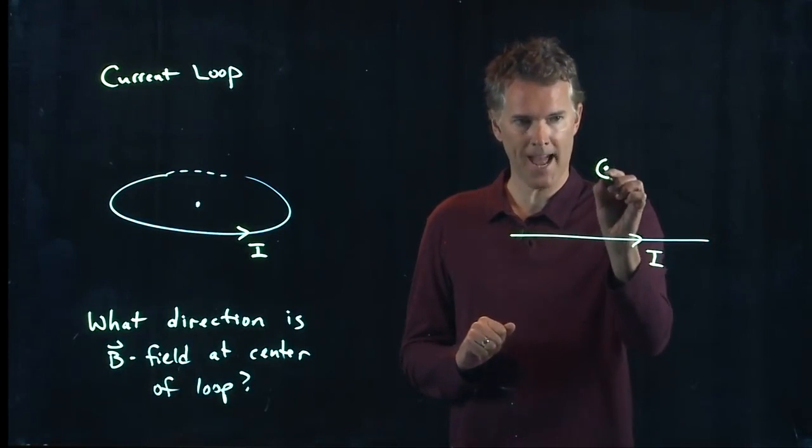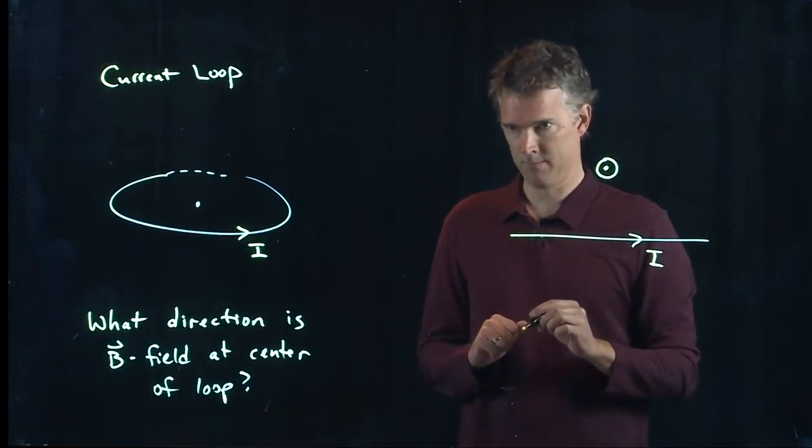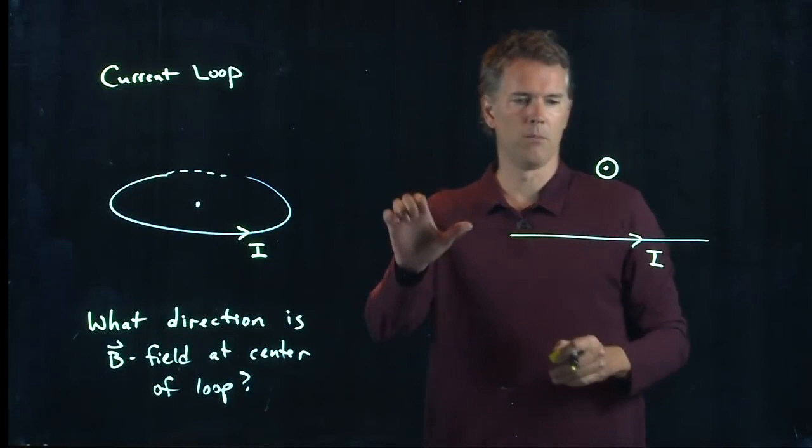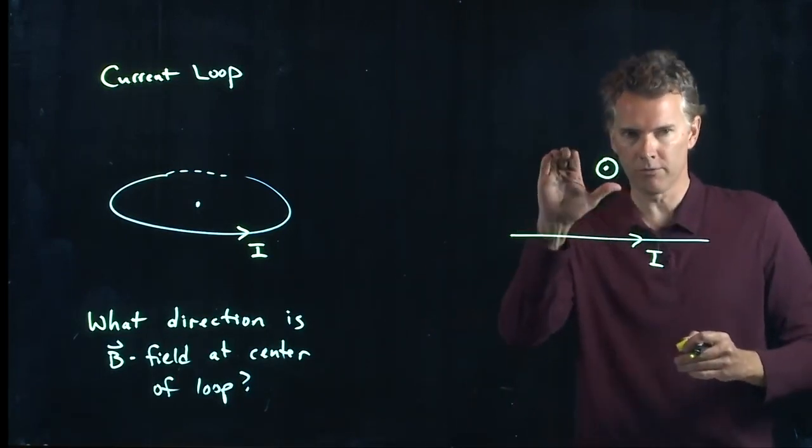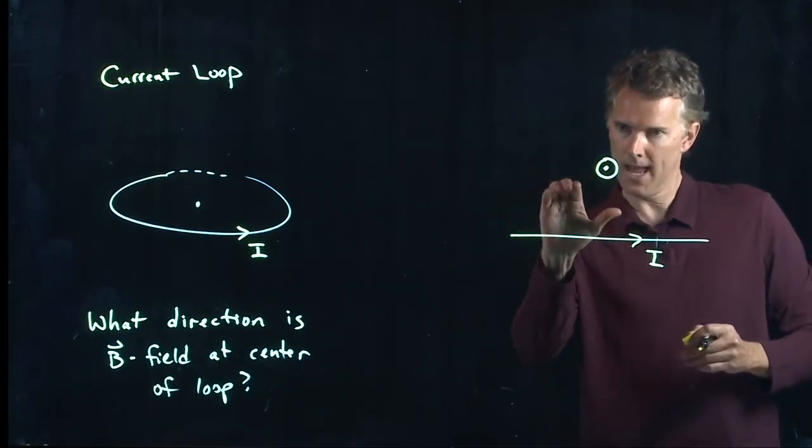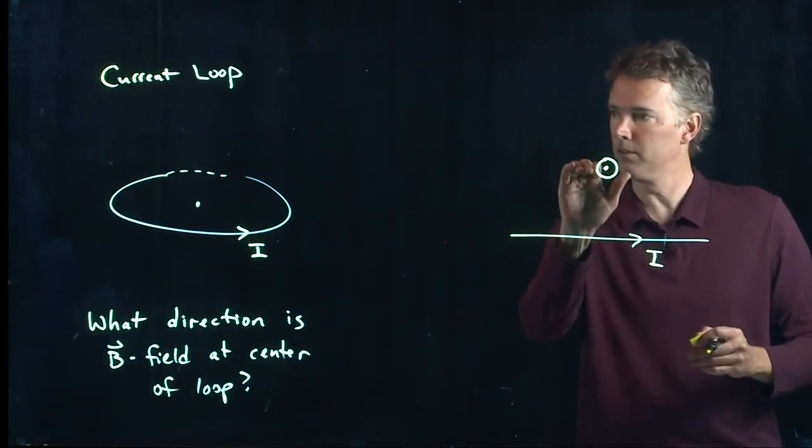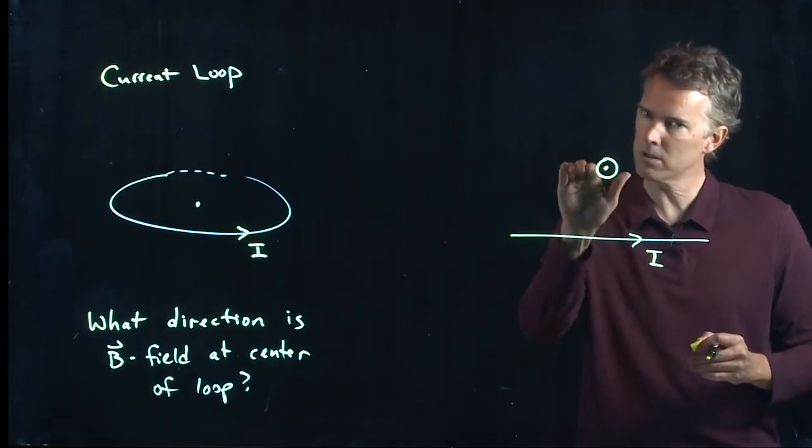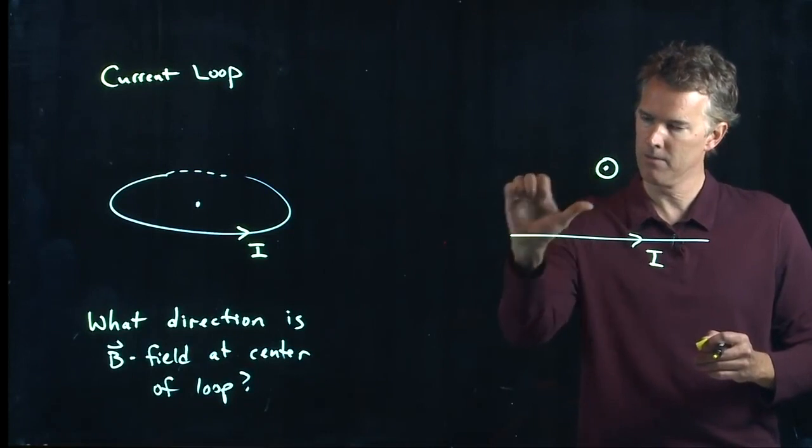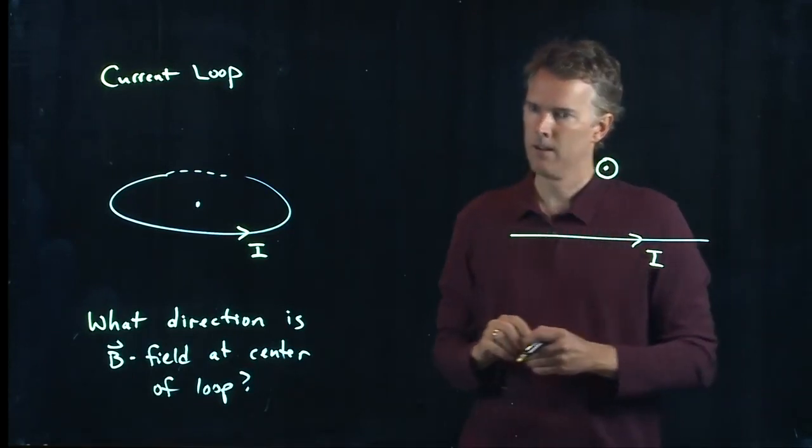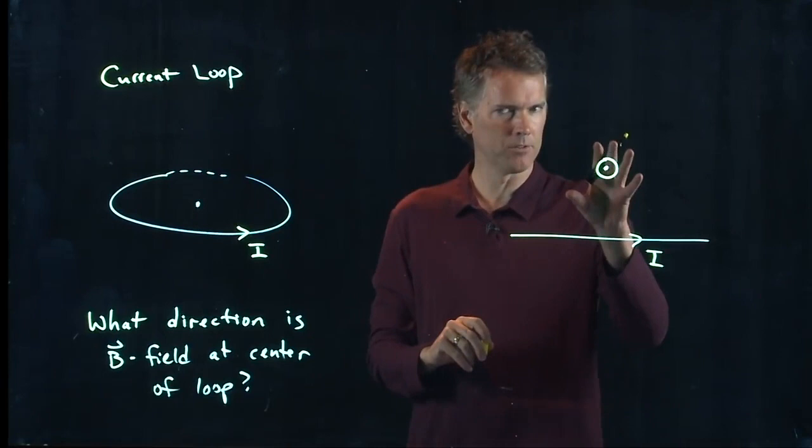It should be coming out of the screen. Right? How do you know that? Put your thumb in the direction of the current, wrap your fingers around, and at this point it's coming towards you. Should be coming out of the computer monitor over there. Thumb in the direction of current, there it comes. Alright, that looks good.